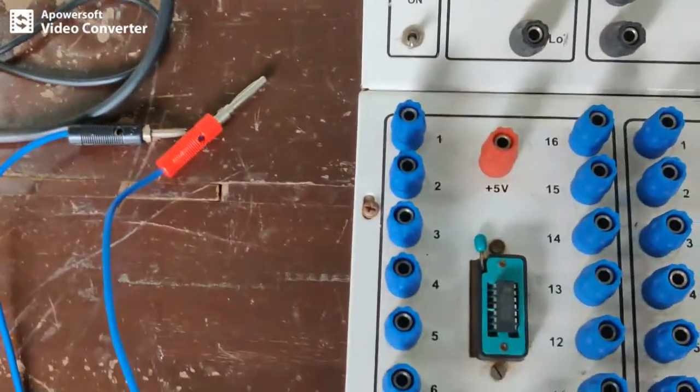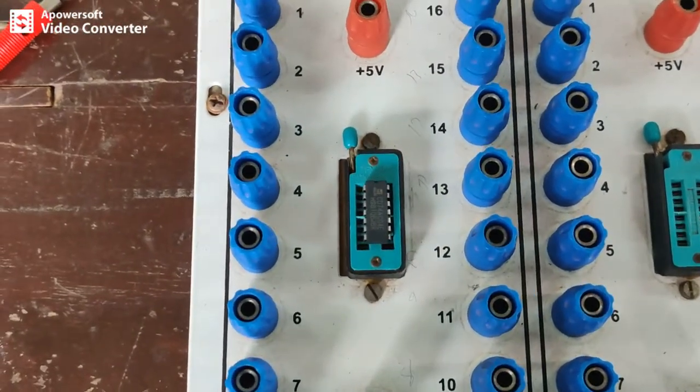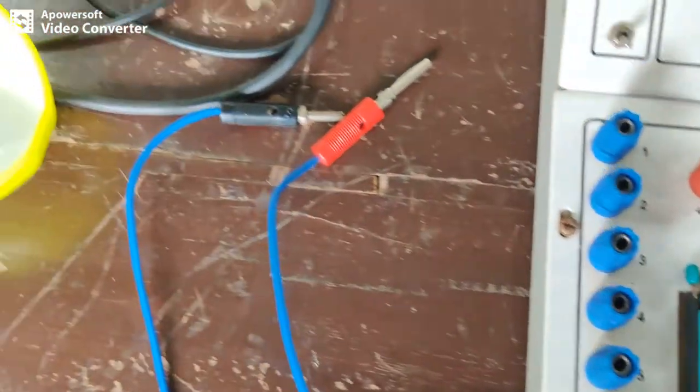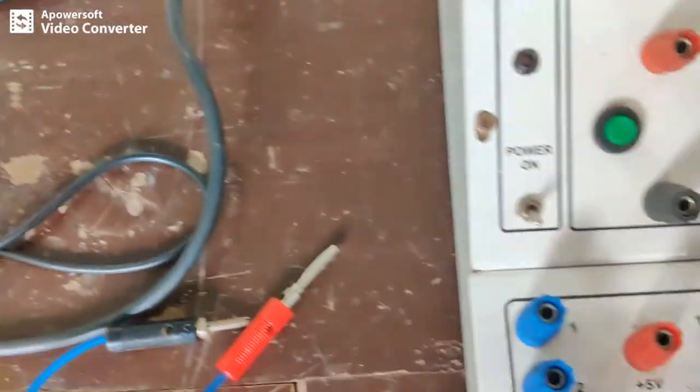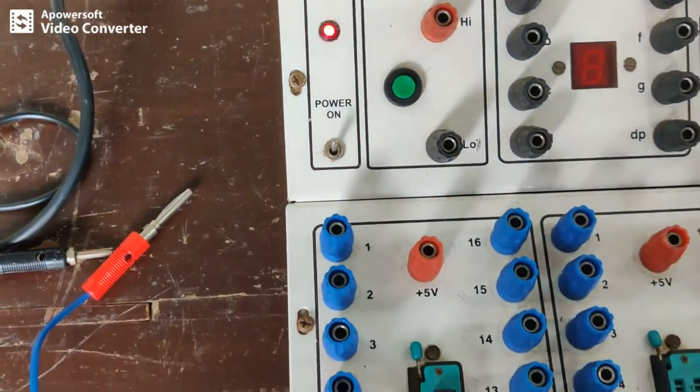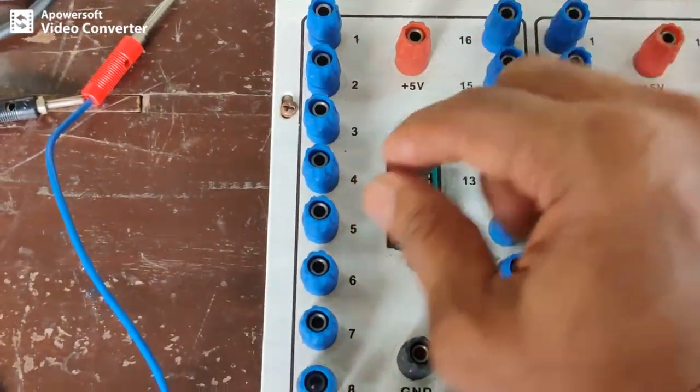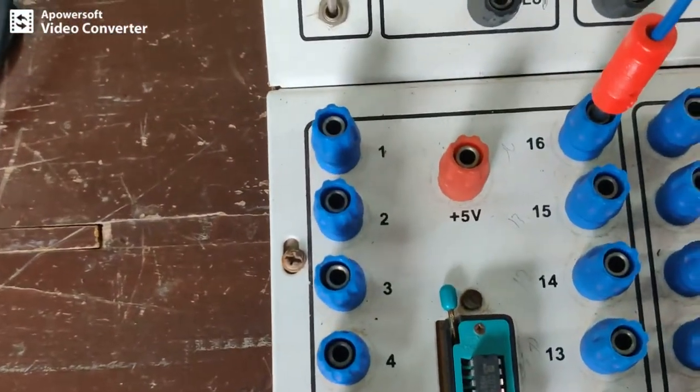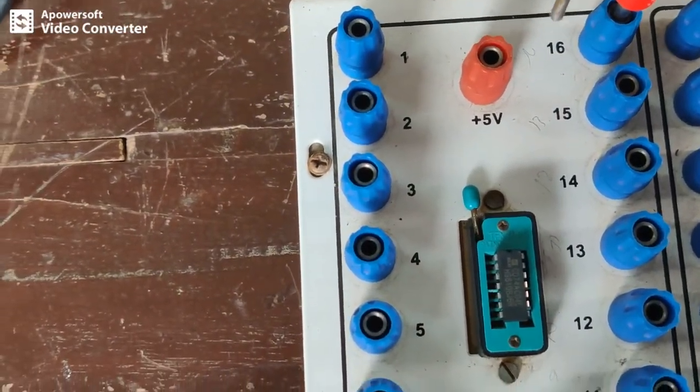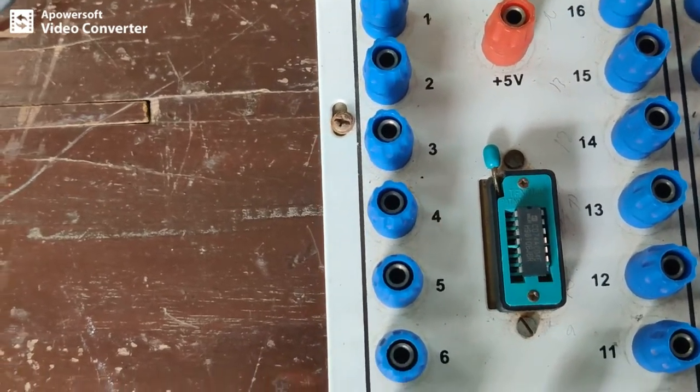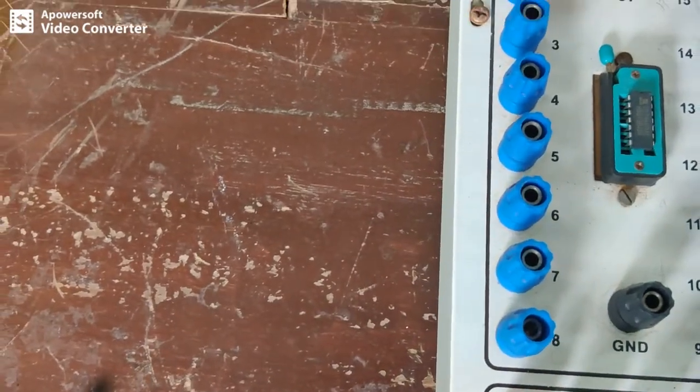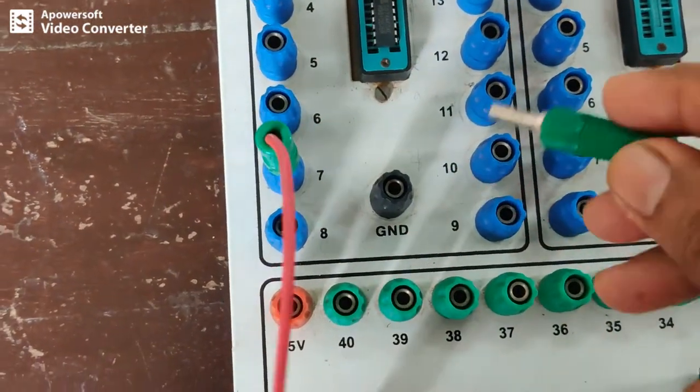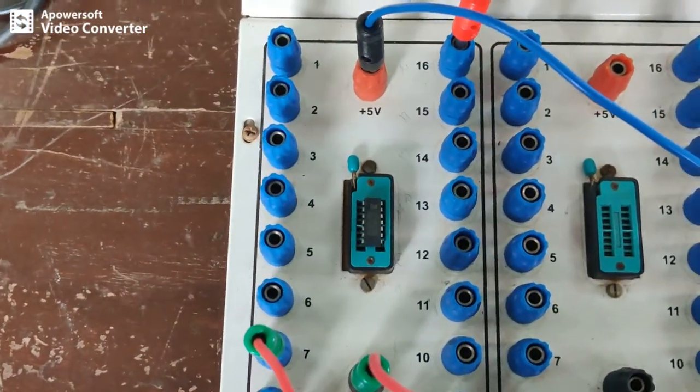Now let me switch on the main supply, then turn on the trainer. First connection: ground pin number 7 is ground. I will give ground.